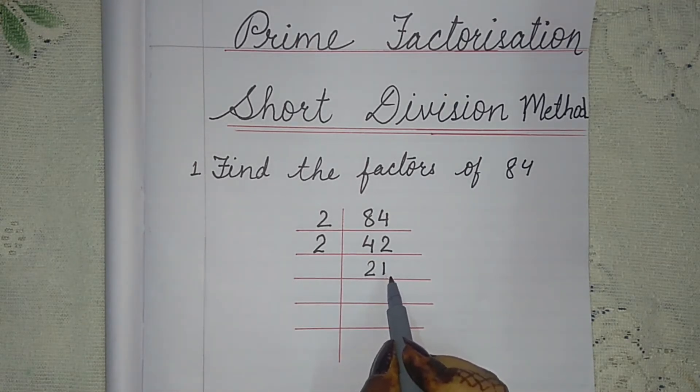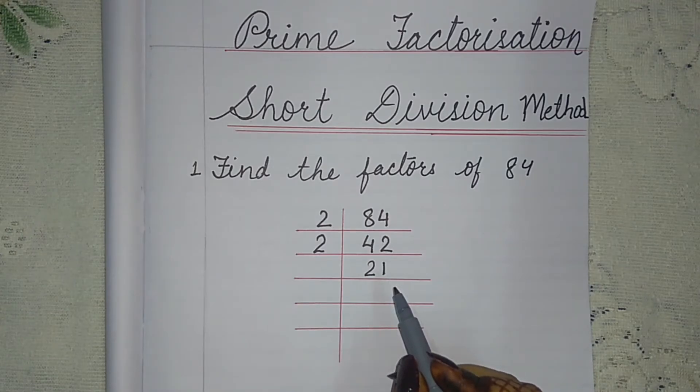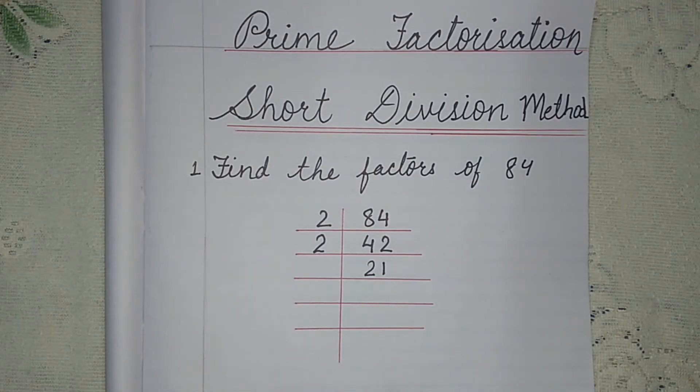As we all know, the last digit is one, it means it is an odd number and odd numbers cannot be divided by 2. Odd numbers are not divisible by 2. So what we will do? Remember in the last video I told you the test of divisibility.